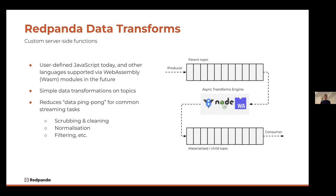Data transforms allows developers to write essentially custom JavaScript functions — and soon, whatever language you want, as long as that code compiles down into a Wasm module. You can deploy JavaScript or Wasm modules into Red Panda and run simple data transforms against your streaming data, essentially on the topics within Red Panda.